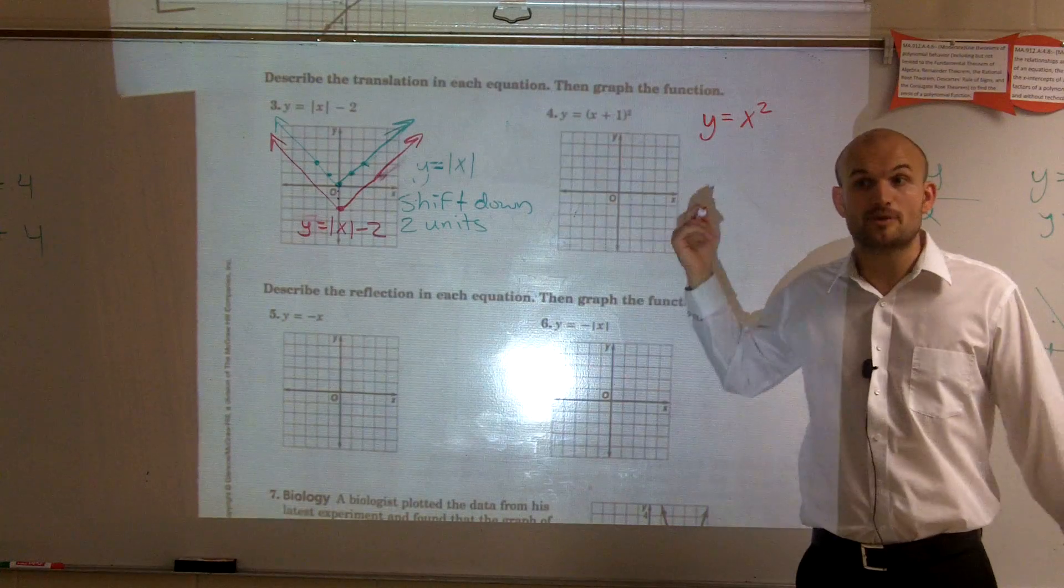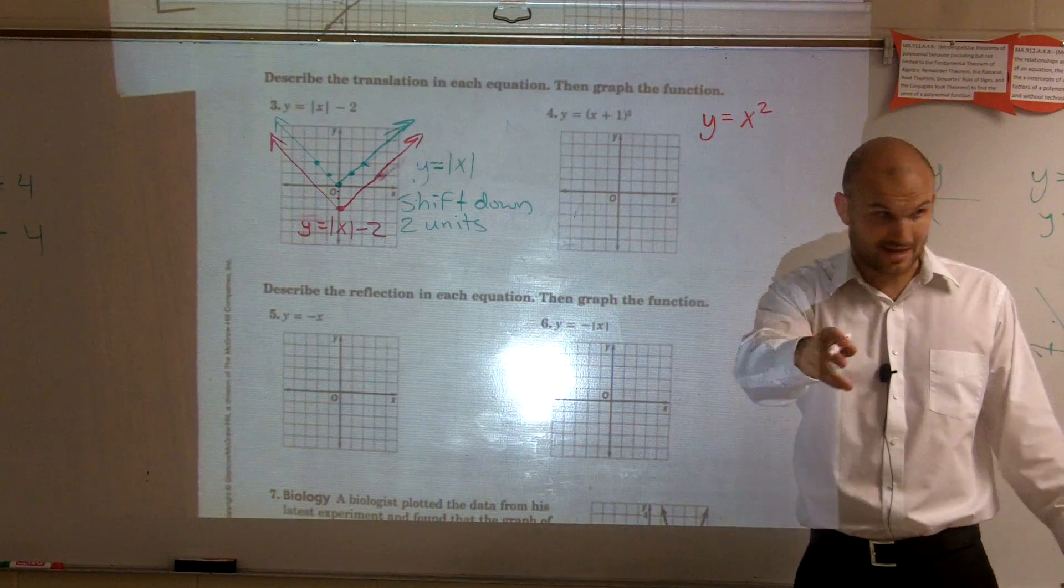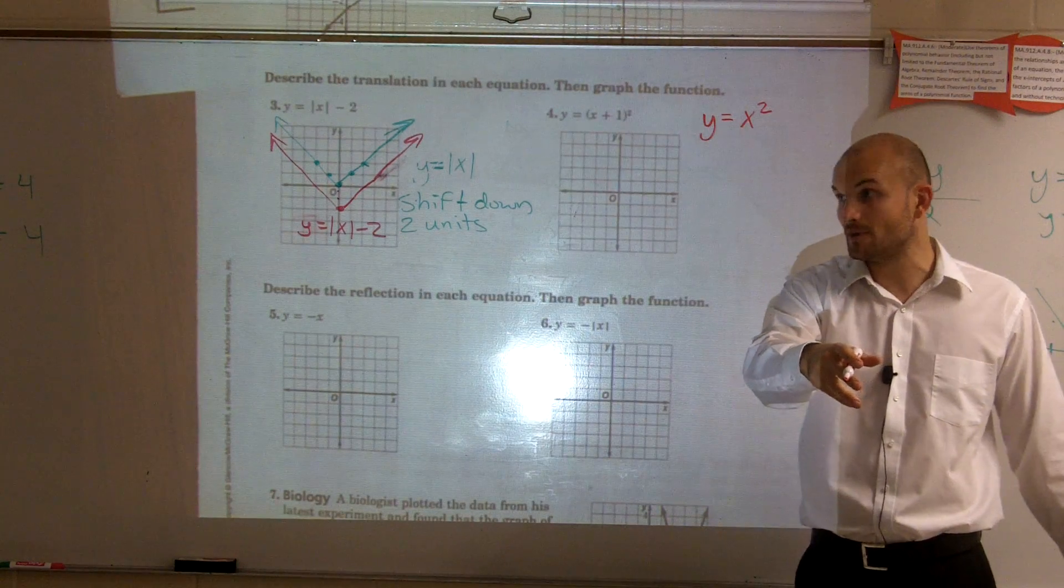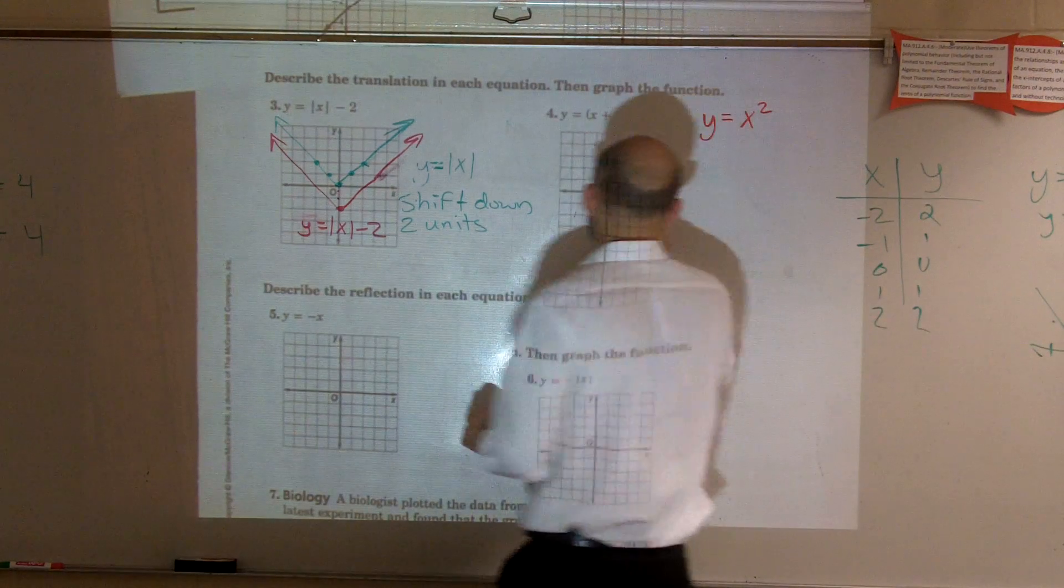So first of all, even once you know the parent graph, you can go ahead and graph it. On your notes, I did show you what the parabola looks like, right? To get the exact points, you can use your table.